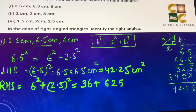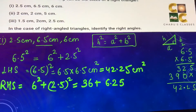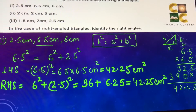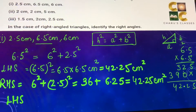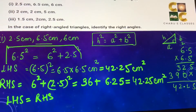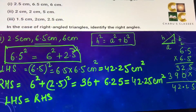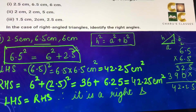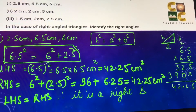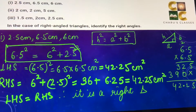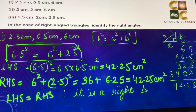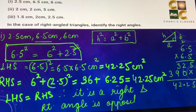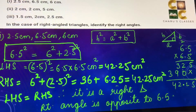Adding 36 and 6.25 gives 42.25 cm². So the left hand side equals the right hand side, which means the Pythagoras theorem holds true, and therefore it is a right triangle. The right angle is always opposite to the hypotenuse, so the right angle is opposite to the longest side, which is the 6.5 cm side.